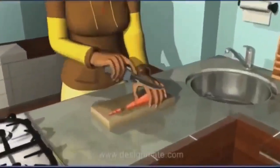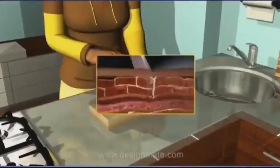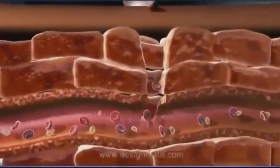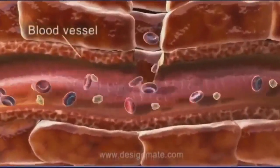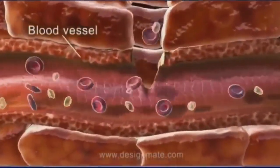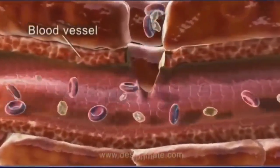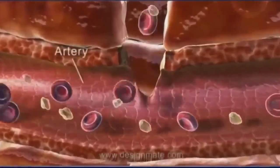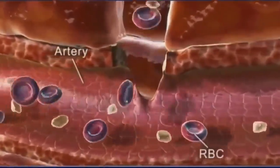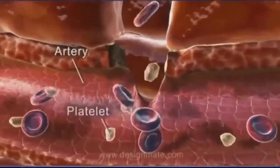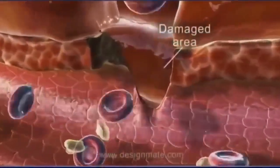If we cut our finger, a zoomed-in view of the damaged area shows that the knife ruptures a blood vessel. This causes immense loss of blood inside the artery. We observe the RBCs and platelets which escape out through the damaged area.